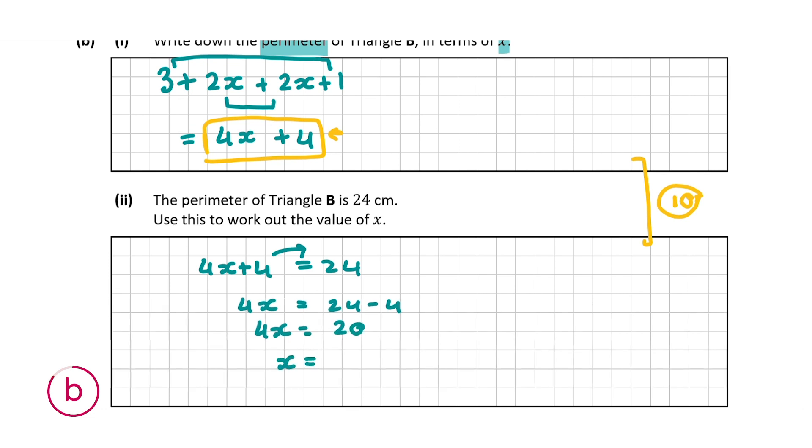So 4X is equal to 20. So X is equal to, I'm going to bring this across and it becomes a divisor, 20 divided by 4 which is 5. So X is equal to 5 and that is our answer for B part 2.